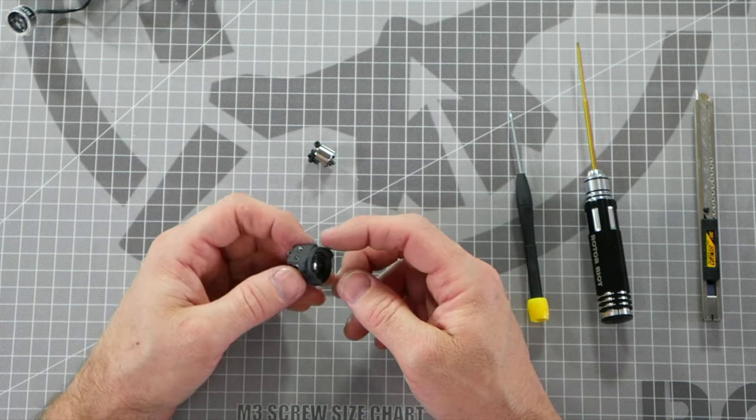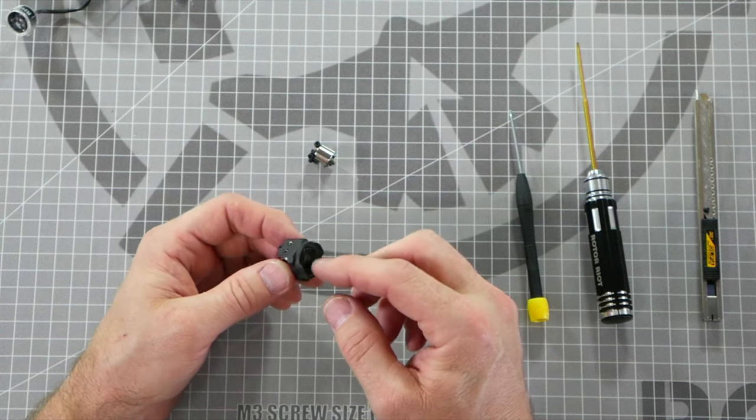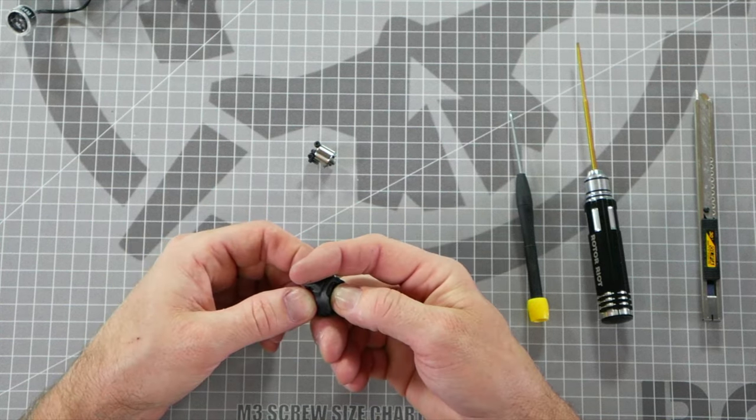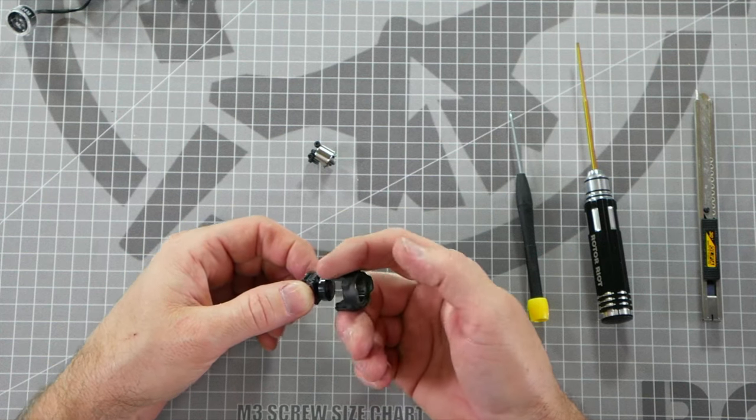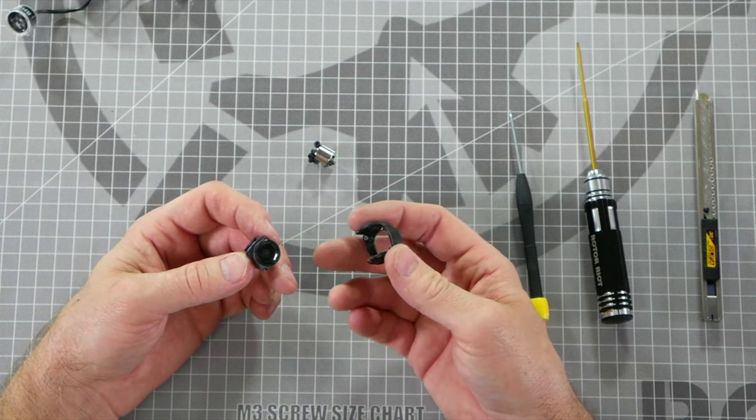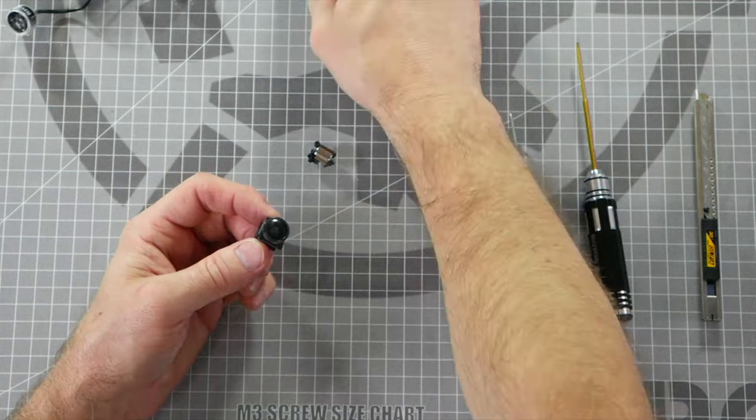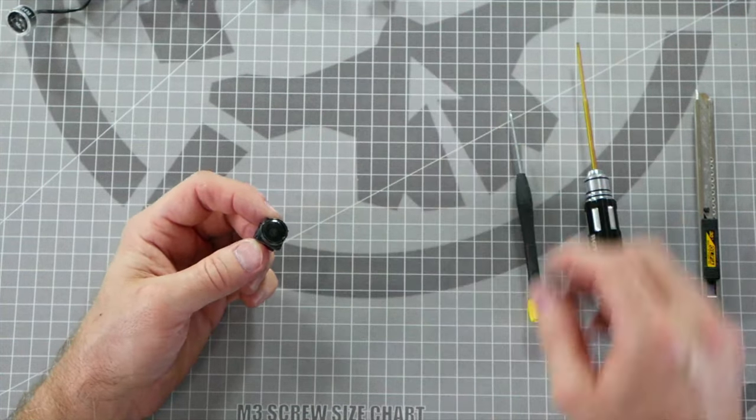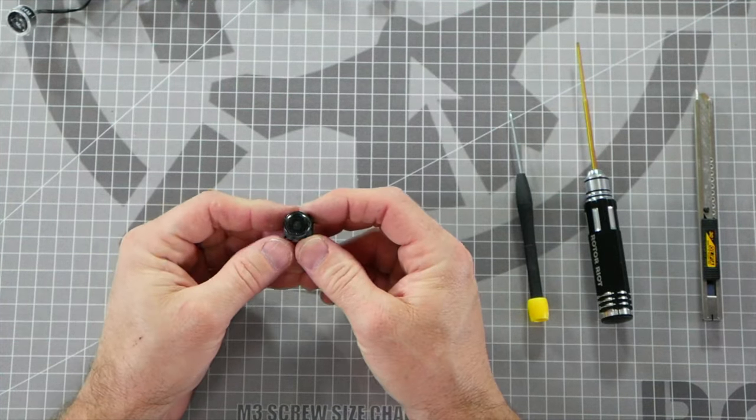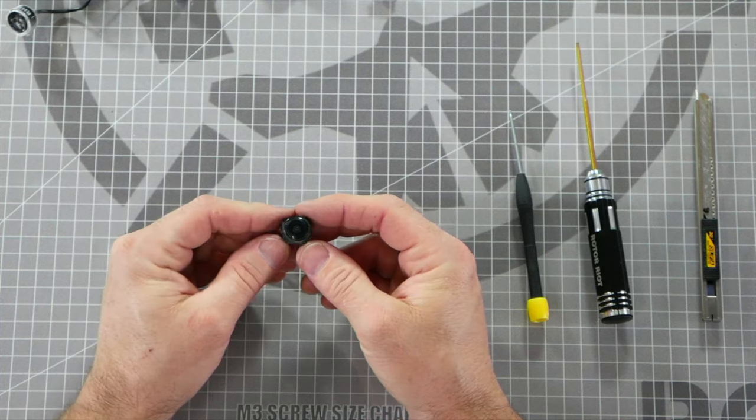Now that those have been removed, we can gently pull the metal mounting plate off of the camera. I like to put my thumb on the camera lens and push it right out. Now the camera casing has been removed from the camera itself. Let's set the magnet and all of our extra pieces aside because this is all we're going to need to buff out our camera lens.